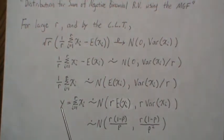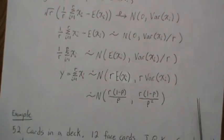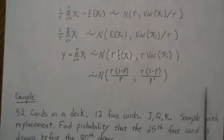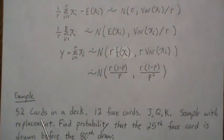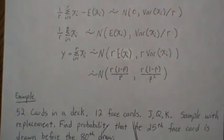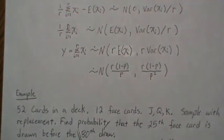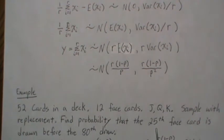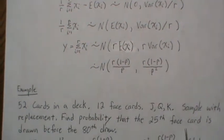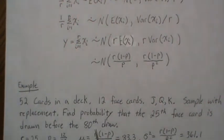So Y is approximately normally distributed with this mean and this variance. Now let's look at a simple contrived example. Let's assume we have 52 cards in a deck. There's 12 face cards, the jack, queen, and king of each suit.